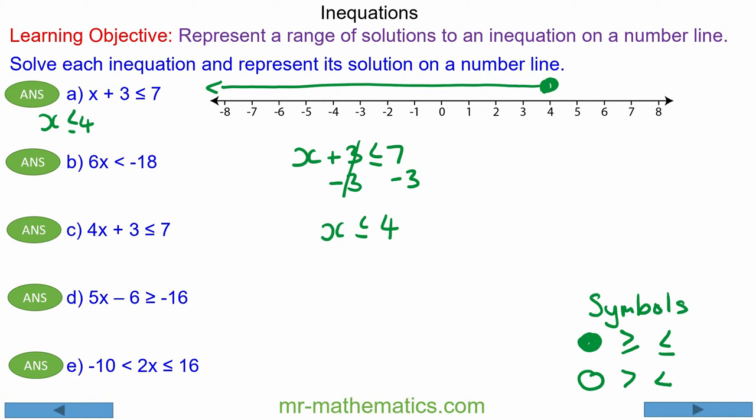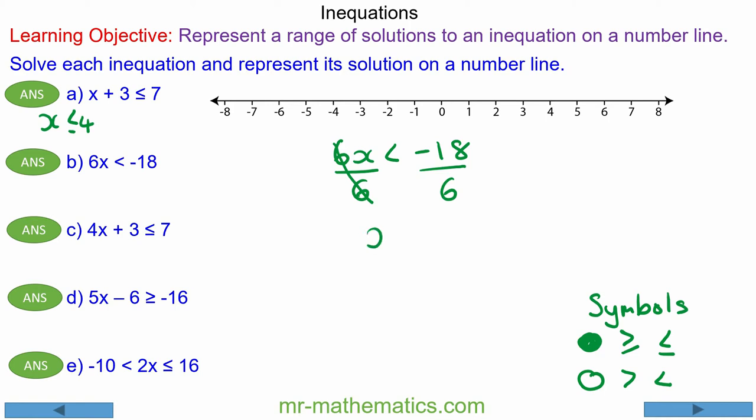For question B we have 6x is less than -18 and again we use the balance method. We're going to divide both by 6 because that is the opposite of times. So x will be less than -18 divided by 6 which is -3. So hollow circle going left from -3.